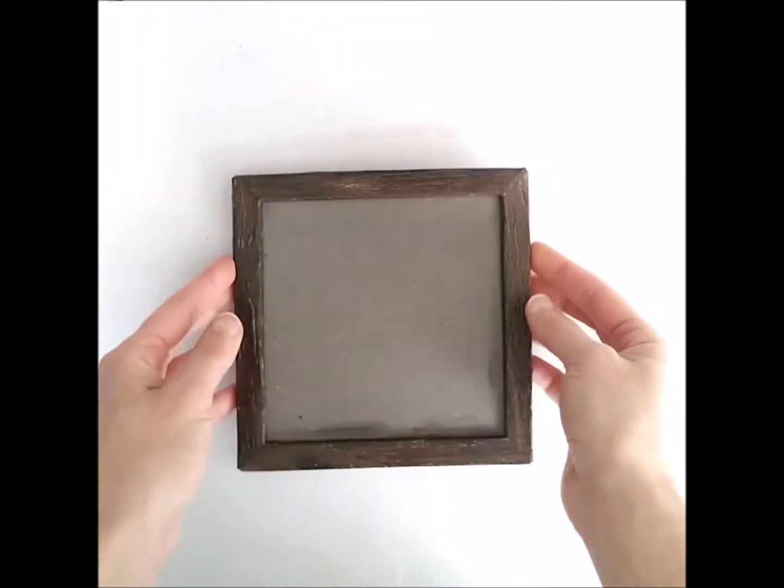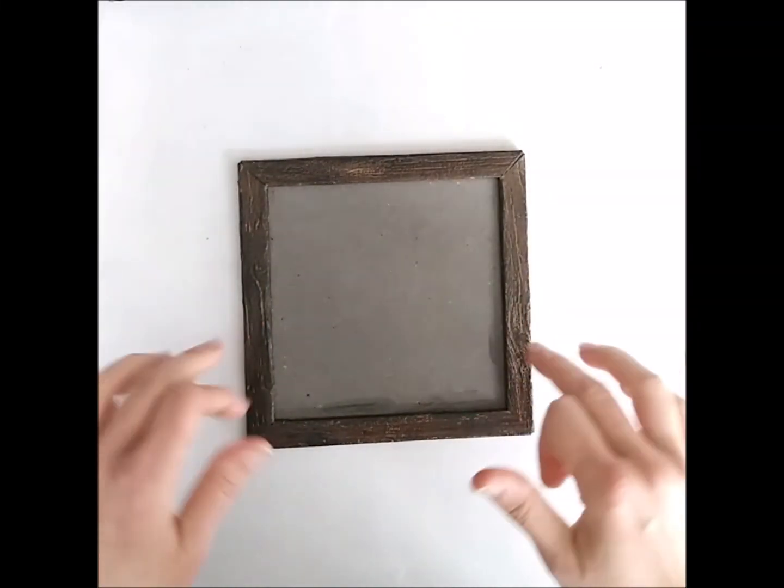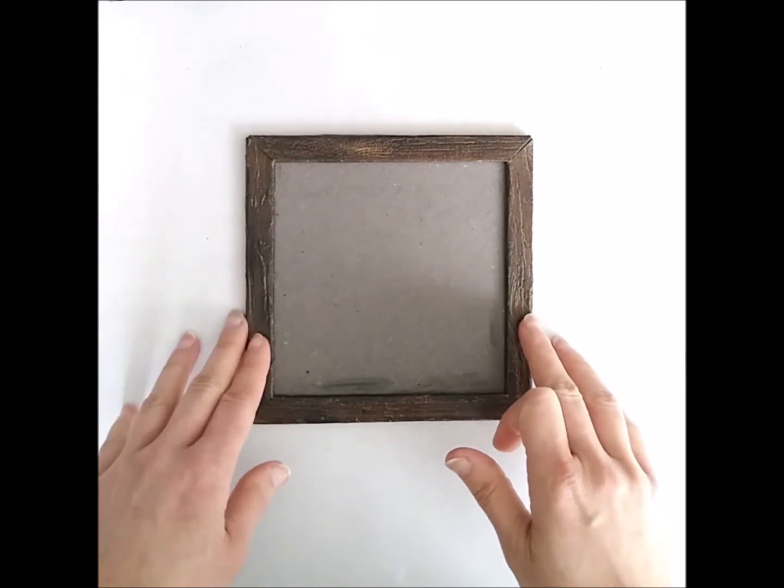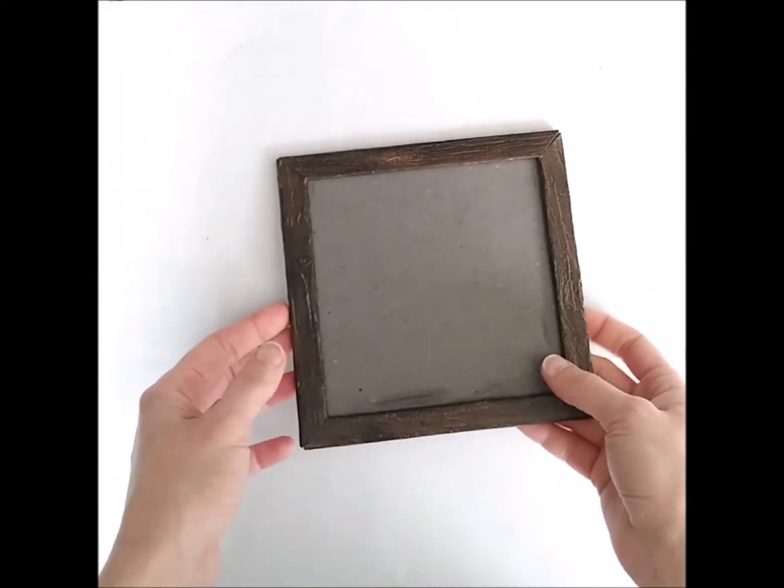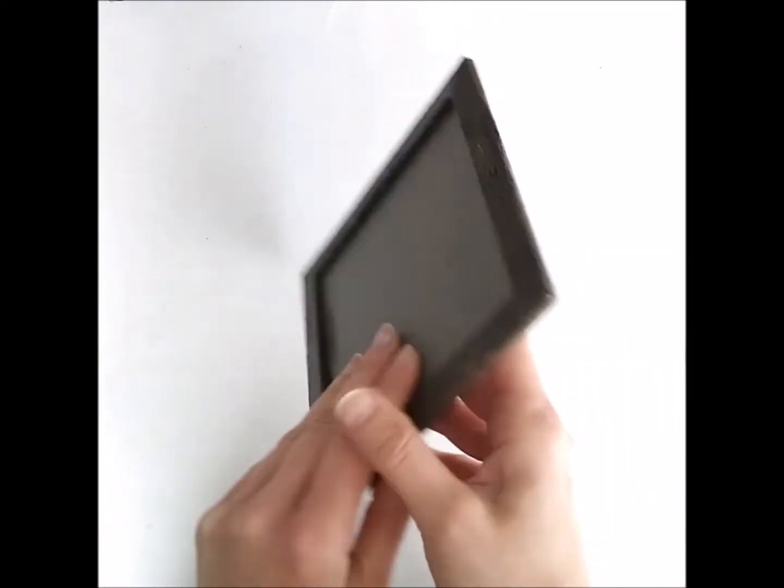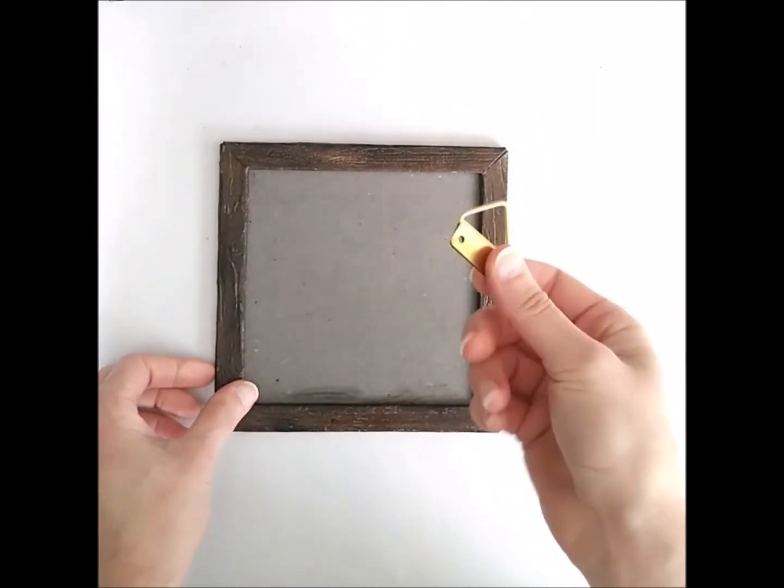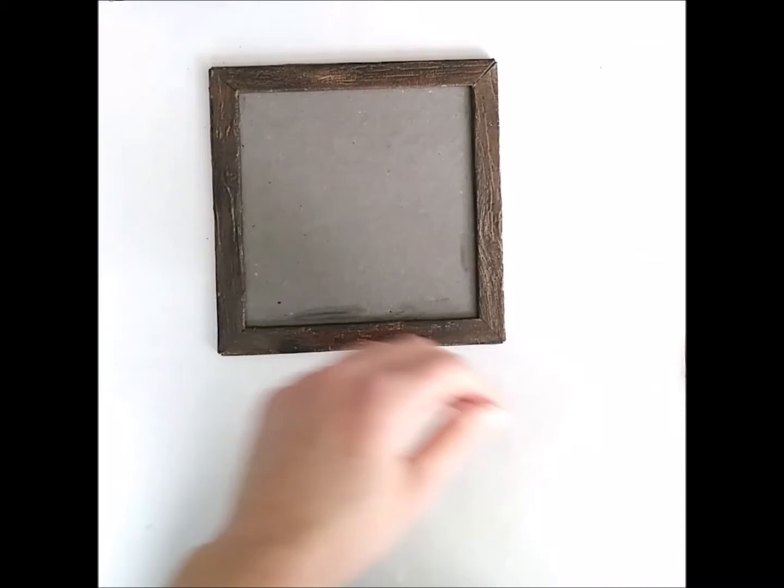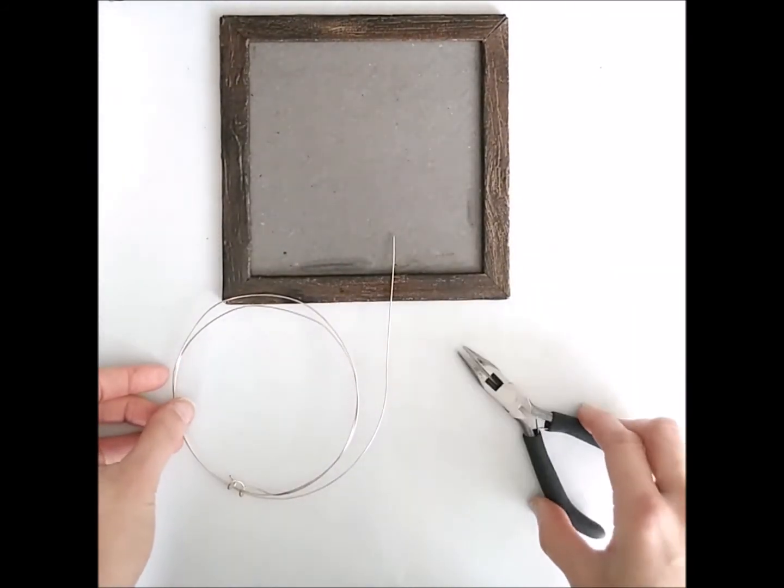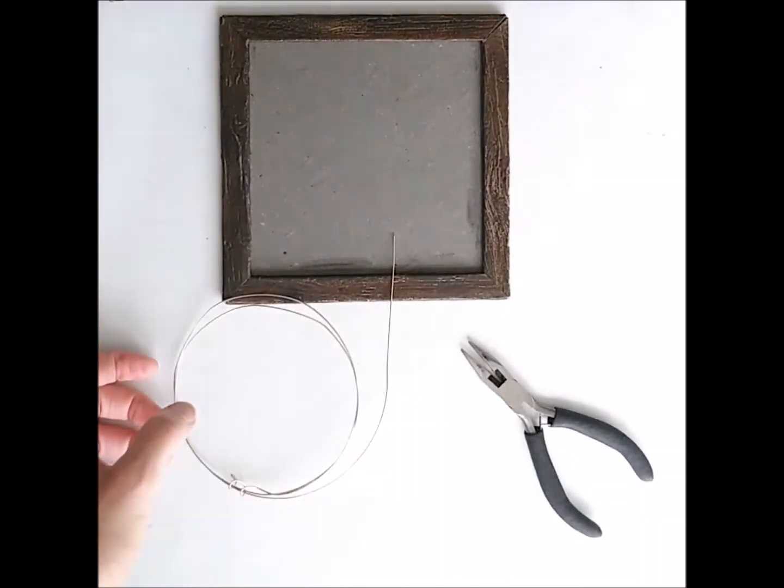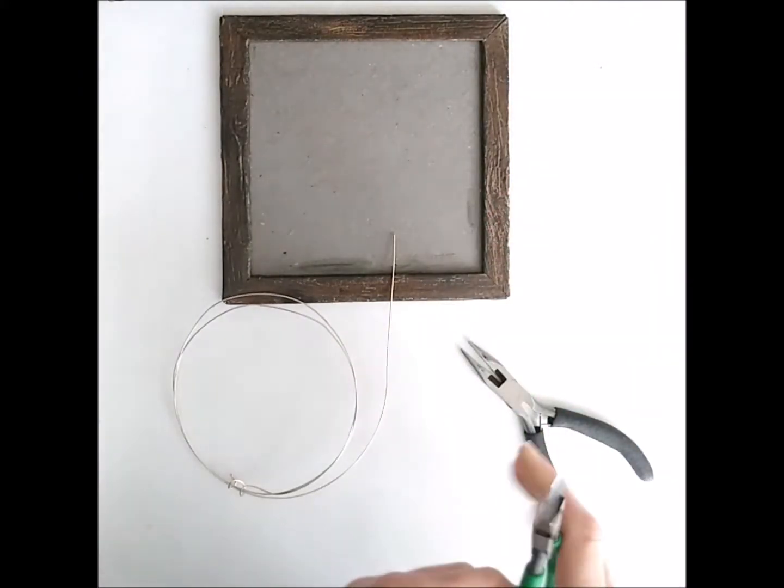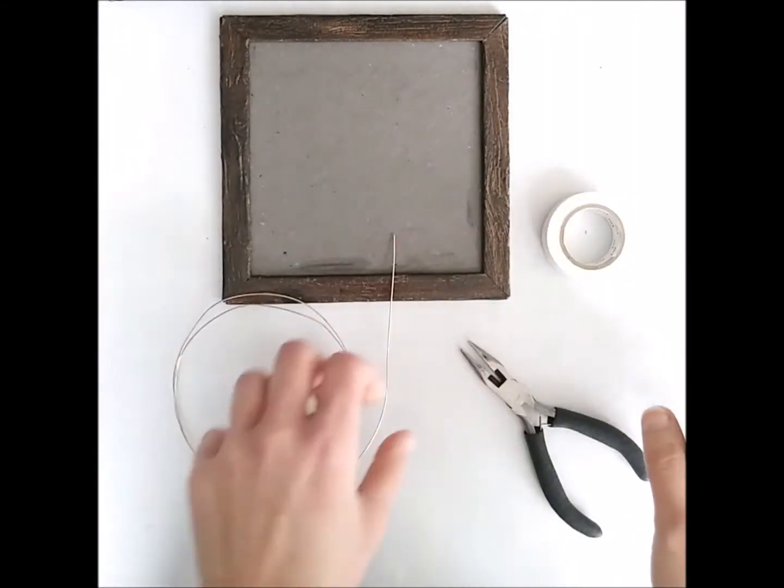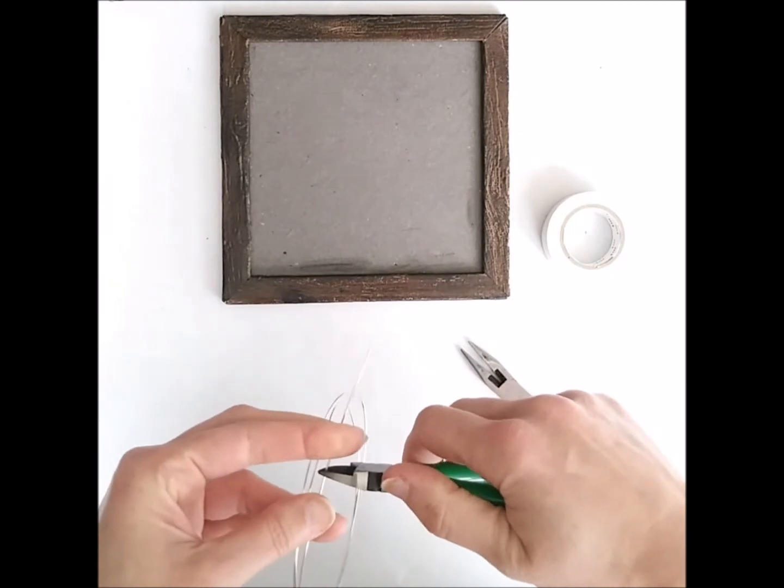And this will be the point where I will add a hanger. Now, you usually can use those triangles that you can buy, but I only have this really big one, so it's too big, so I decided to make one. So what you need is wire, a plier, a cutter, yes, and some washi tape or any tape.